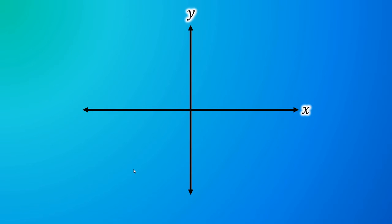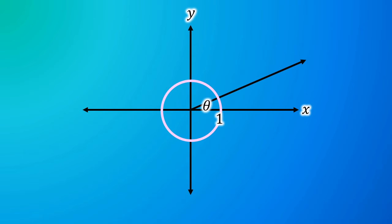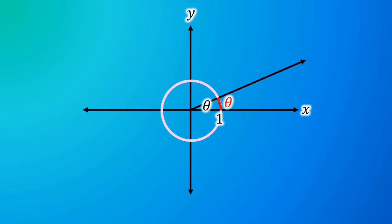Here are our x and y-axis. Here's a unit circle, and now here is theta. What would be this length marked in red? Based on the definition of radians, which we are using in this explanation, this length would be theta units.